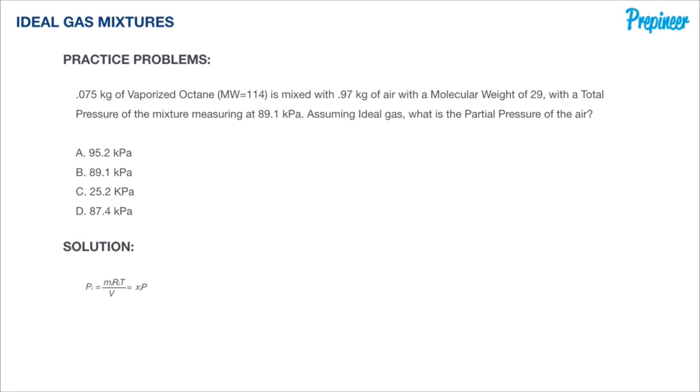Now defining octane as component 1 and air as component 2, we have the following given information: we have the molecular weight for both components, we have the mass of each component, and we have a total pressure of 89.1 kPa.